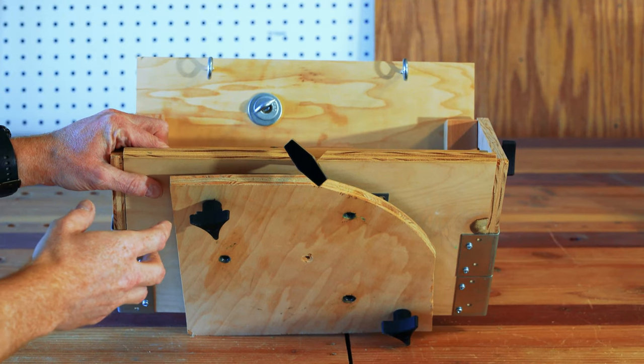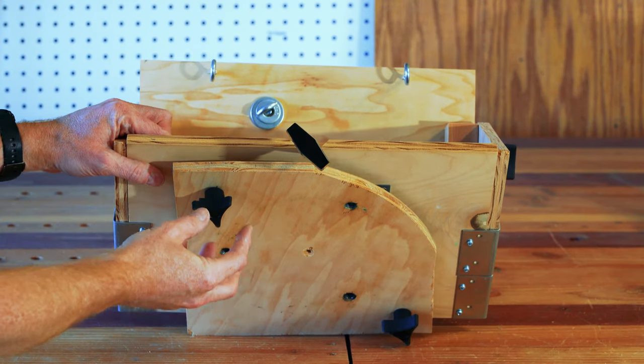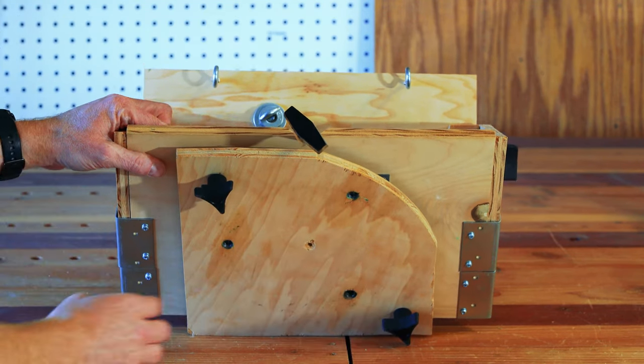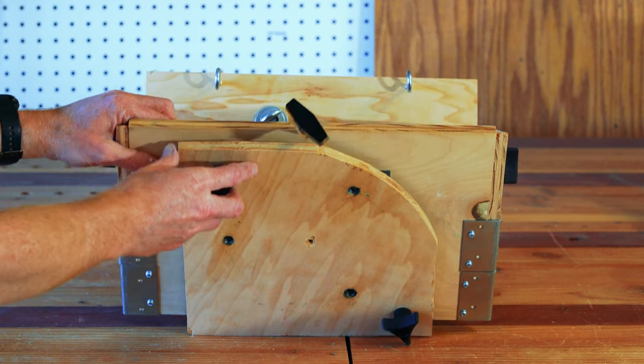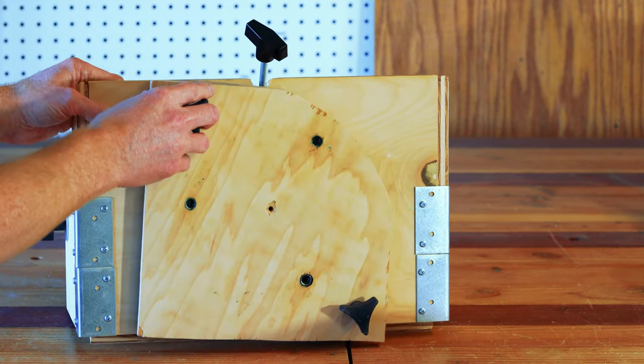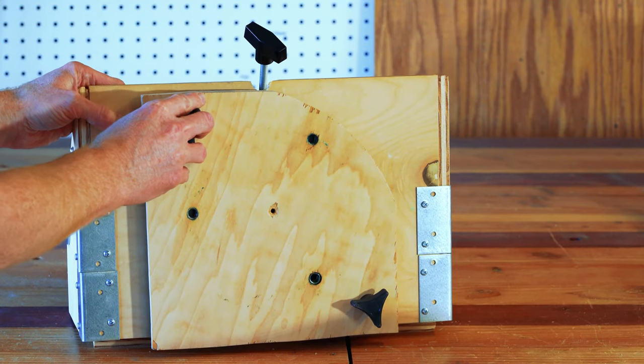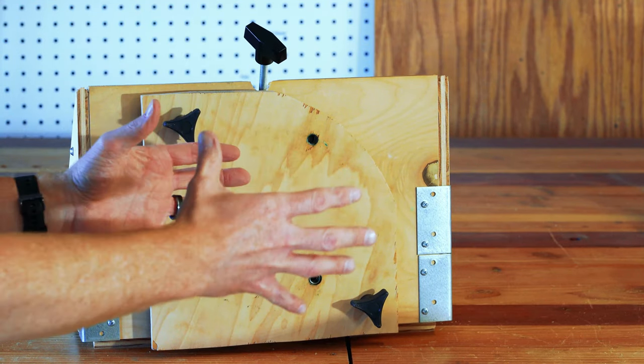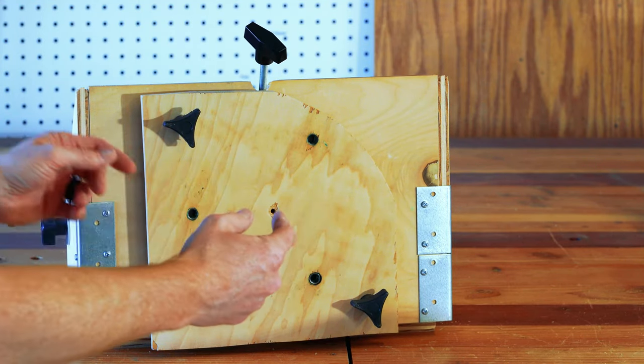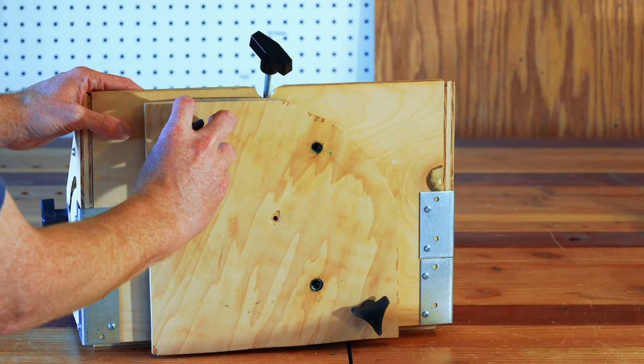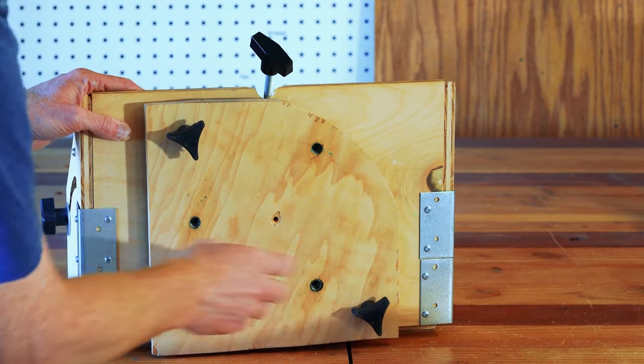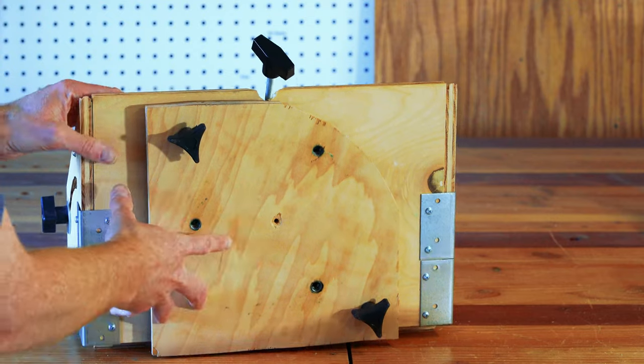The only other part worth noting here is that there are a couple of knobs on the bottom piece as well. As I mentioned earlier, the purpose of this is that the Lazy Susan will allow you to make side-to-side adjustments. Well, once you get it adjusted, you don't want it moving, so you can tighten these knobs and sort of lock it in place.